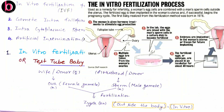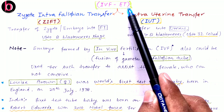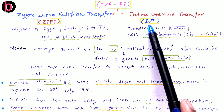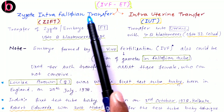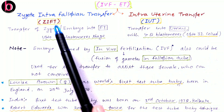In the test tube baby process, only fertilization of the egg occurs outside the body. The rest of the events — cleavage (embryonic mitosis), implantation, and the whole pregnancy — occur inside the respective female's body. IVF-ET is categorized into two types: ZIFT (Zygote Intra Fallopian Transfer) and IUT (Intrauterine Transfer).